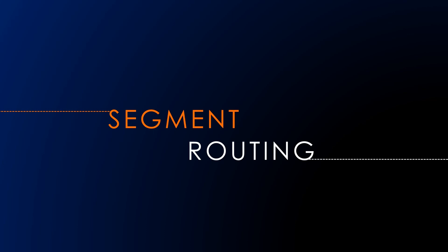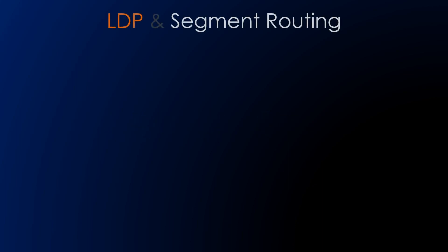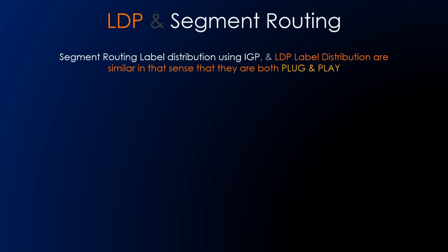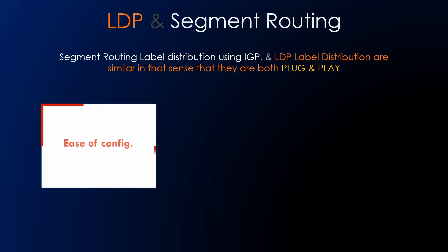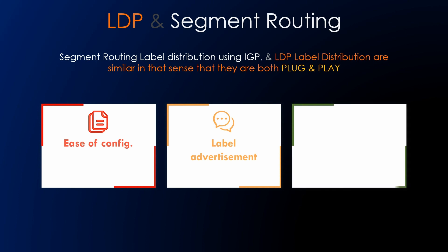First, we'll see the difference between LDP and segment routing. Segment routing label distribution using IGP and LDP label distribution are similar in the sense that they are both plug-and-play and easy to configure. Labels are automatically advertised among routers when an adjacency peering is formed, and there are no label switch paths to manually configure. Additionally, both are stateless and derived automatically for each node.